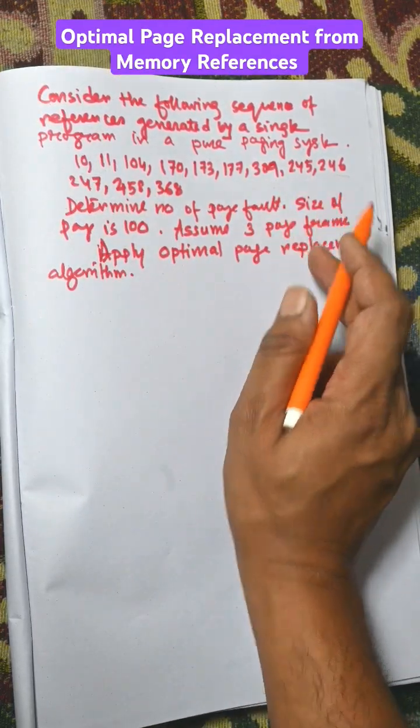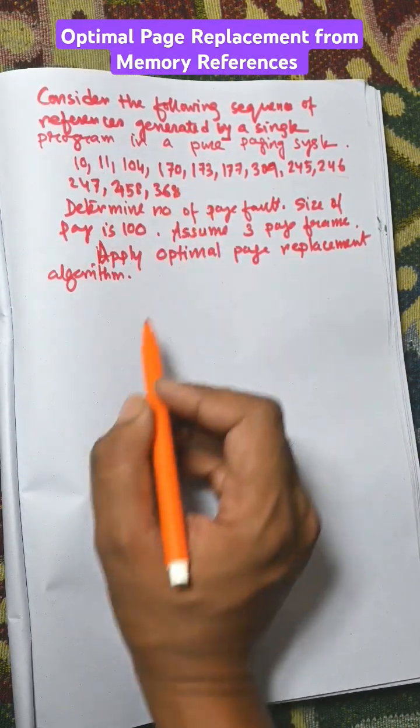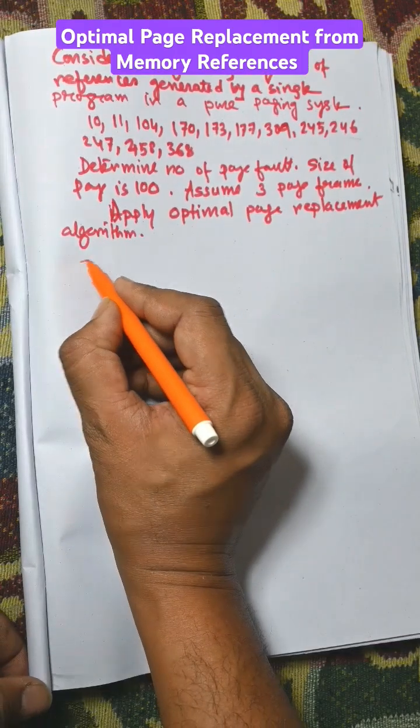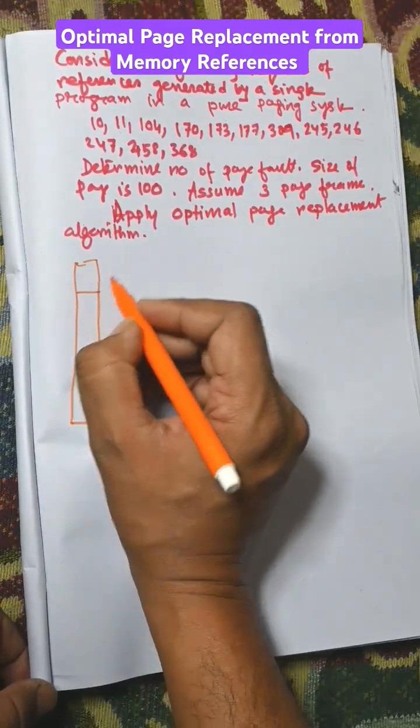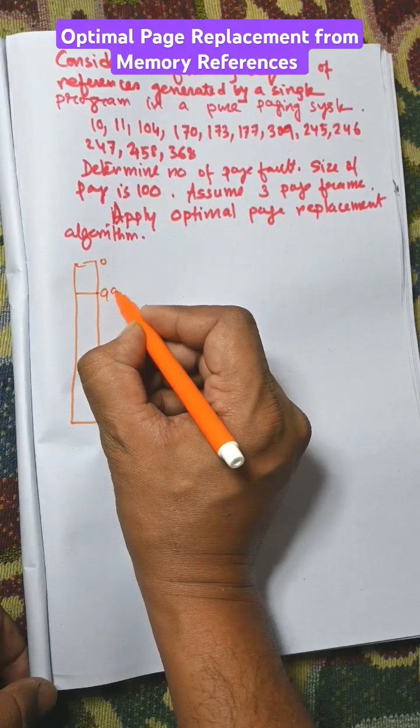Not the page number, they are known as addresses and they are memory references. Page size is 100, so first of all you need to find the total memory. 0 to 99 is page 0, 99 to 199 is page 1.